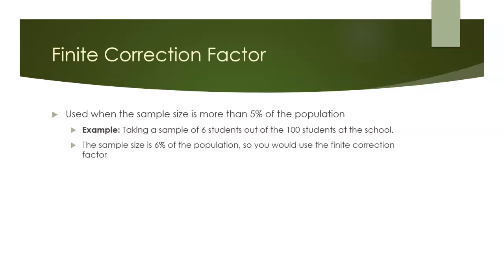Now, when you use the finite correction factor, what you're doing is making a slight adjustment to the standard error equation. So this is our basic standard error equation for the standard error for the mean. We take our population standard deviation, divide it by the square root of our sample size.